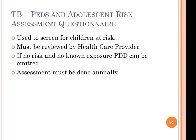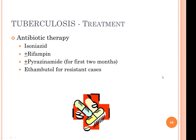The pediatric and adolescent risk assessment questionnaire is used to screen children to determine their possible risk for TB and must be reviewed annually by a healthcare provider. If there are no known risks, we generally won't apply a PPD test. For latent TB, even though there is no active disease, we prophylactically treat persons with medications so they don't develop the disease. They can still have a positive PPD while on medications, but that does not mean they have tuberculosis.